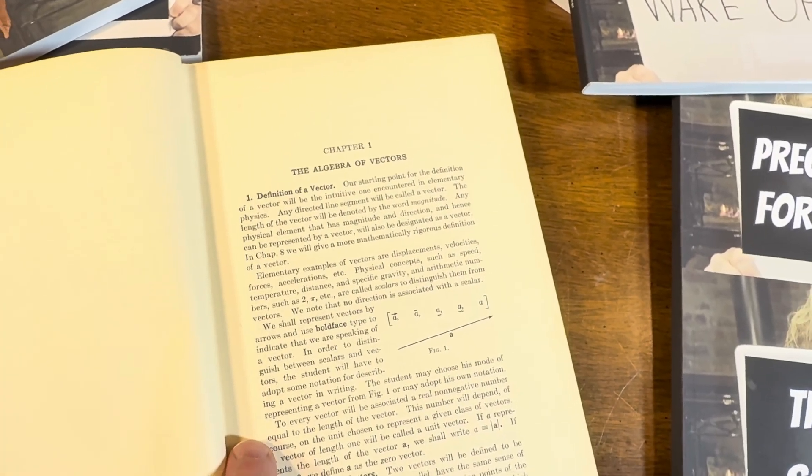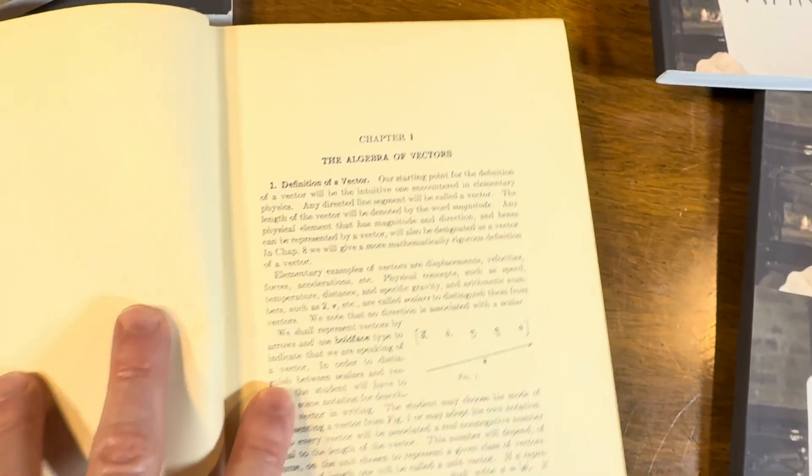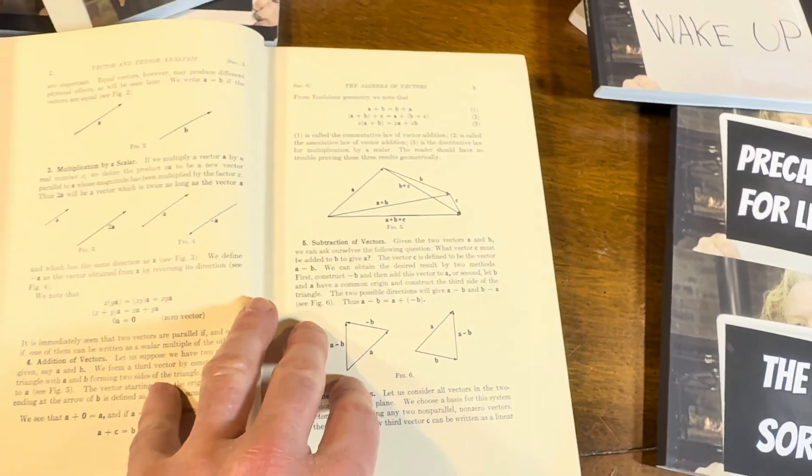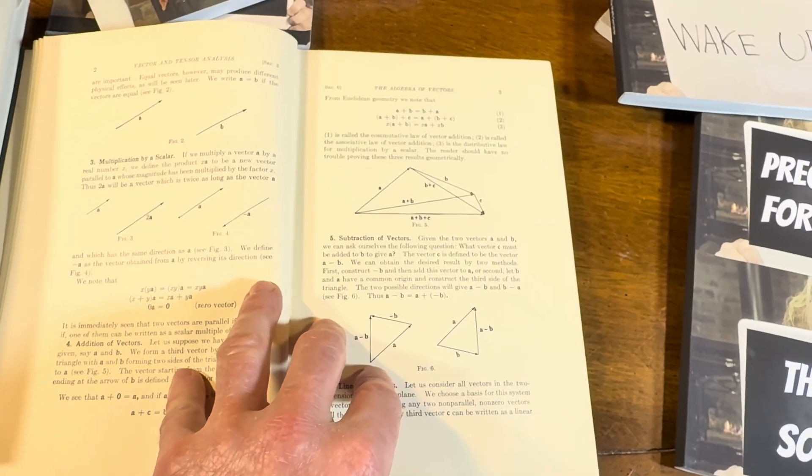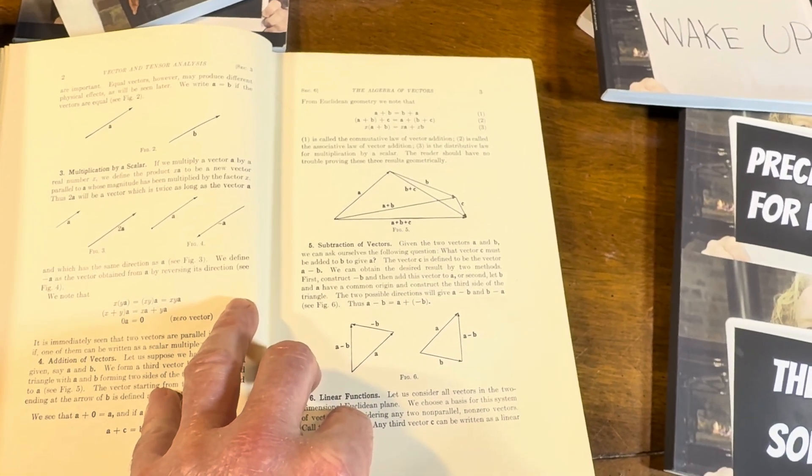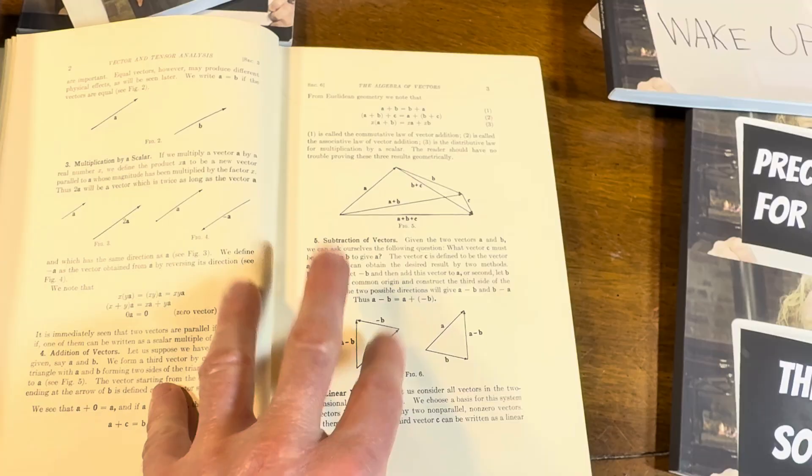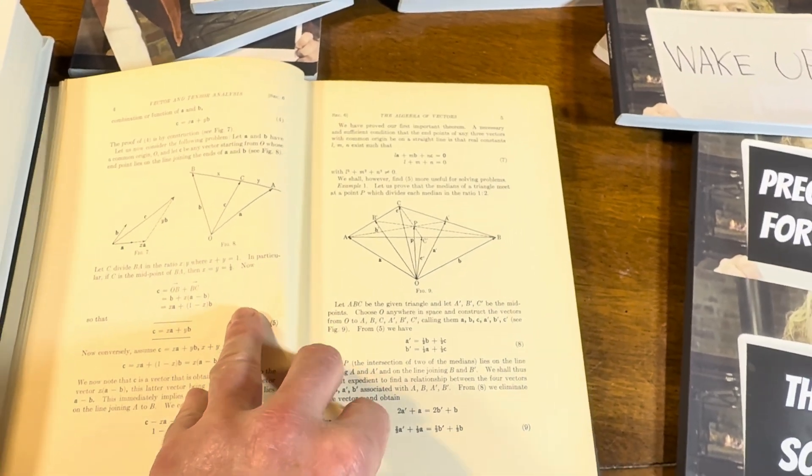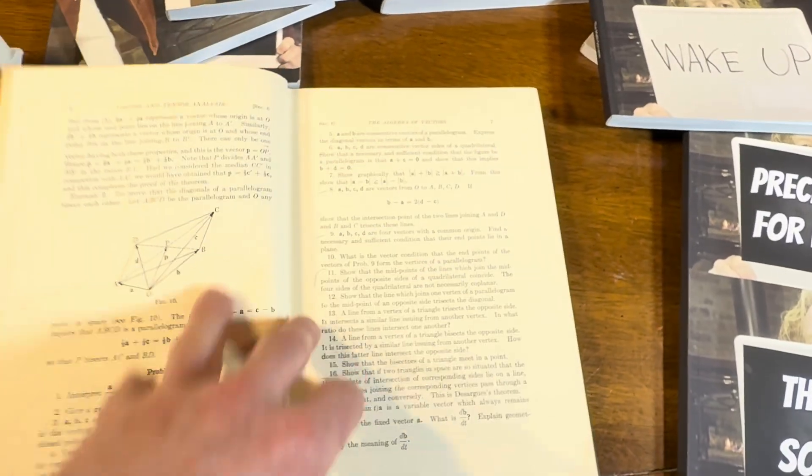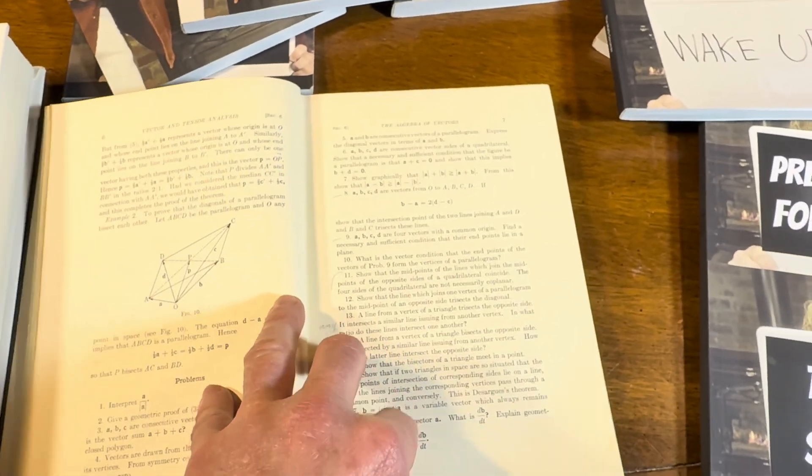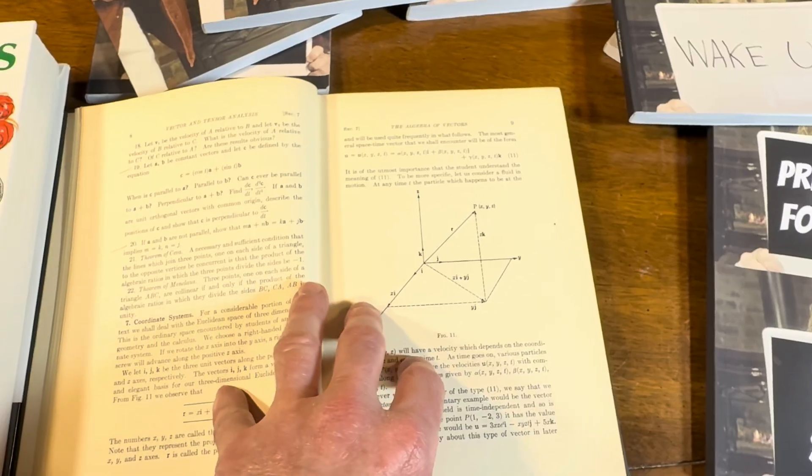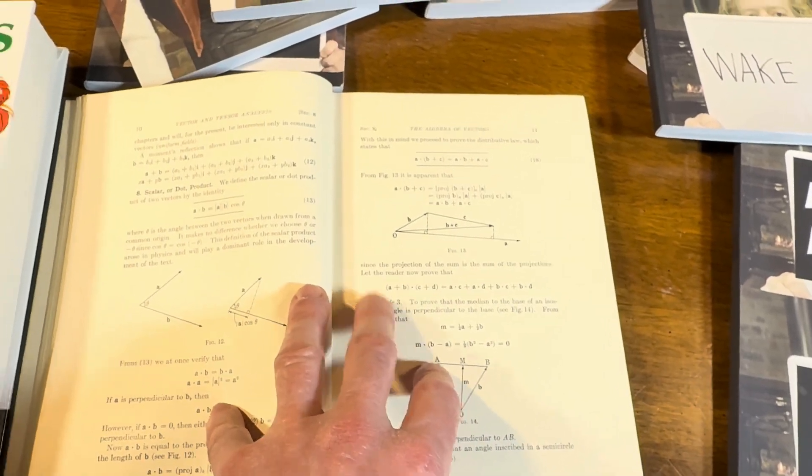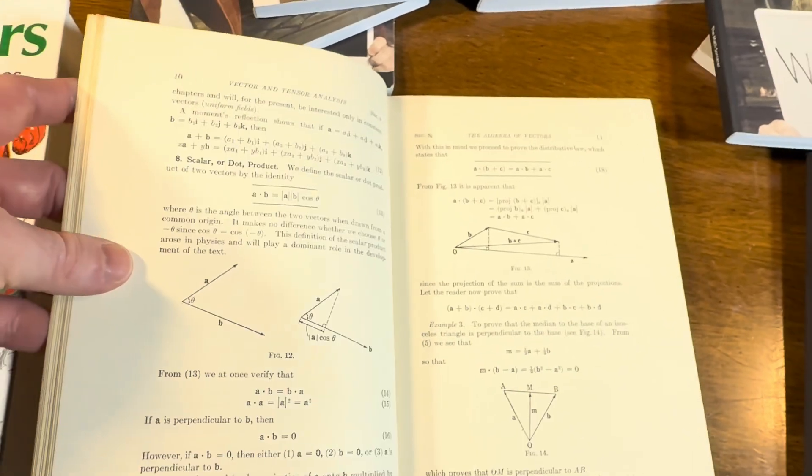And here we see it starts in a very basic way, right? The definition of a vector. So really basic stuff, but then it accelerates quite quickly. And this reminds me of a book I have written by H.P. Phillips from around the same era. And it looks very similar. The intro is very similar to this one. And it just shows it's a sign of the times, right? Books written during the same era usually follow similar patterns. So a lot of the modern math books today are very similar. And I suppose it was the same back in 1950.